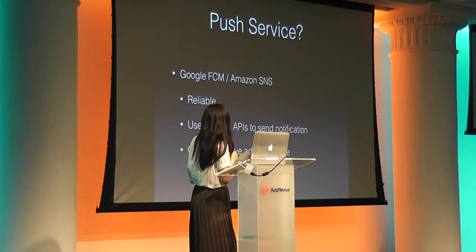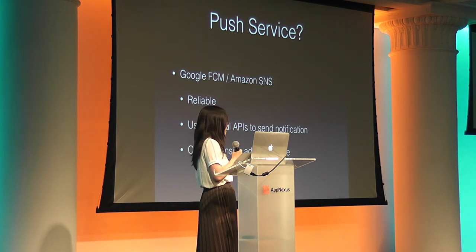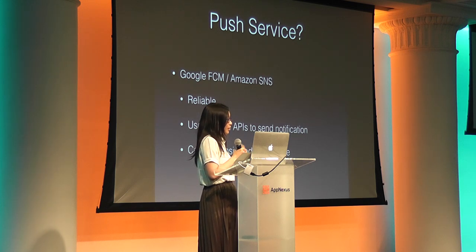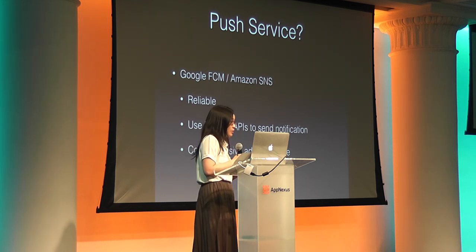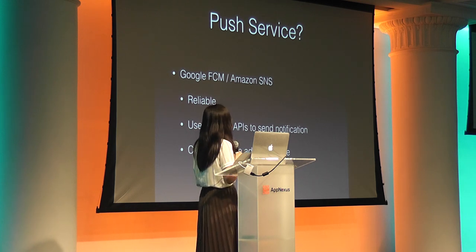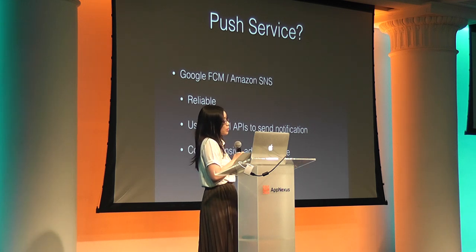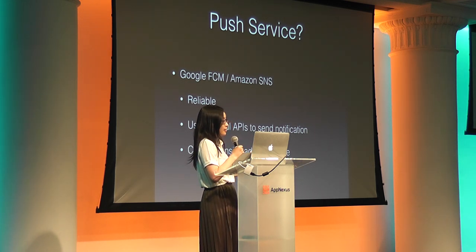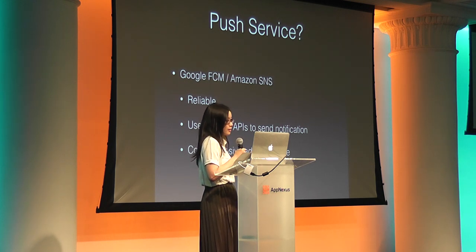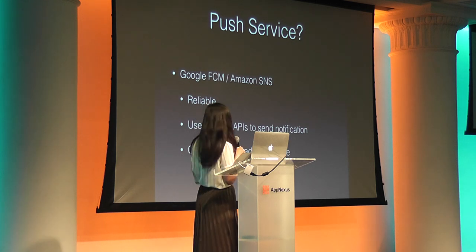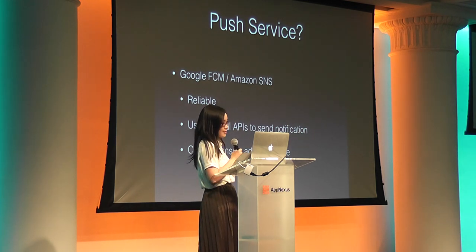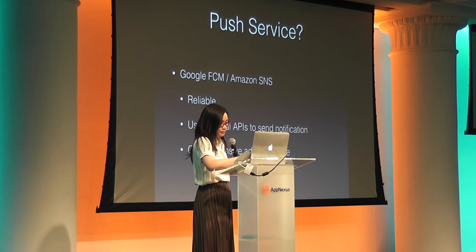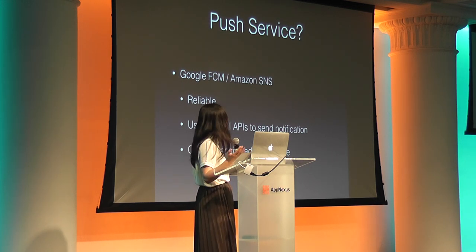So it seems like all the problems are solved — our backend service simply connects to FCM. But there is one more thing: how do you know which device to send to? There is something called a token that gets generated on the device. At registration time, the device generates the token and sends it to your backend app server. The next time you need to send a notification from the backend, you use this token as an identifier and send it to Apple, FCM, or Amazon SNS, which recognizes it and dispatches to the device that has that token.